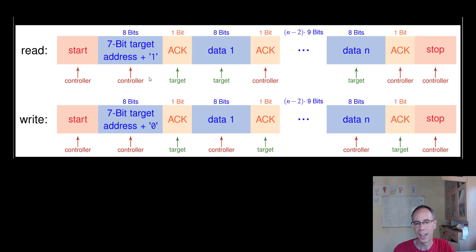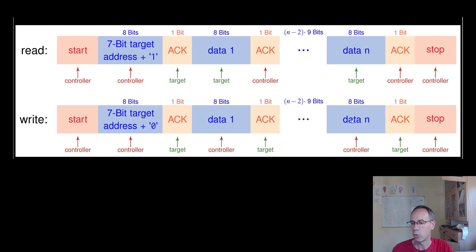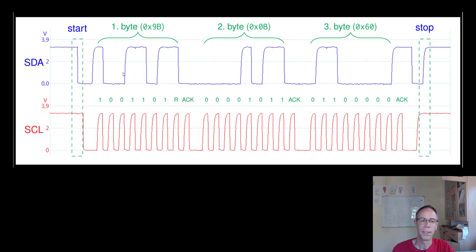Note on naming: we now use the terms controller and target. Those familiar with the older terminology — it was previously called master and slave. New specifications call it controller and target. For a write communication, it is similar except we are just sending data. We send the start condition and the address of the sensor, but add a zero for the write command. The target acknowledges and the controller sends data, typically a register address to point to or set configuration data.